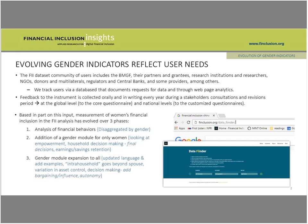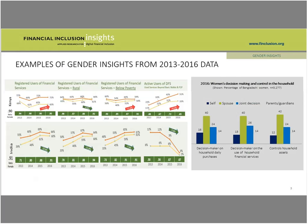We also started looking at variation in asset control — for example, are you managing money for food and health, but not for investment in enterprise or your children's education? We tried to add some questions on ability to negotiate. From those 16 questions in the gender module and from the disaggregation of dozens of financial behavior questions, we are seeing increasing insights on women's experience with financial services. For example, we can look at decision-making on daily purchases versus the use of households and how that breaks down for a woman versus their spouse versus parents and guardians versus a joint decision.